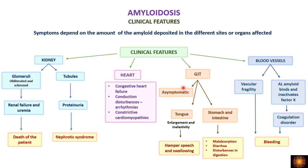In GIT involvement the patient can be asymptomatic, or if deposition occurs in the tongue it becomes enlarged with inelasticity, hampering speech and swallowing. If the stomach and intestines are involved there will be malabsorption, diarrhea, and disturbances in digestion. When blood vessels are involved, vascular fragility causes bleeding. Additionally, AL amyloid binds to factor X and inactivates it, causing a coagulation disorder leading to further bleeding.